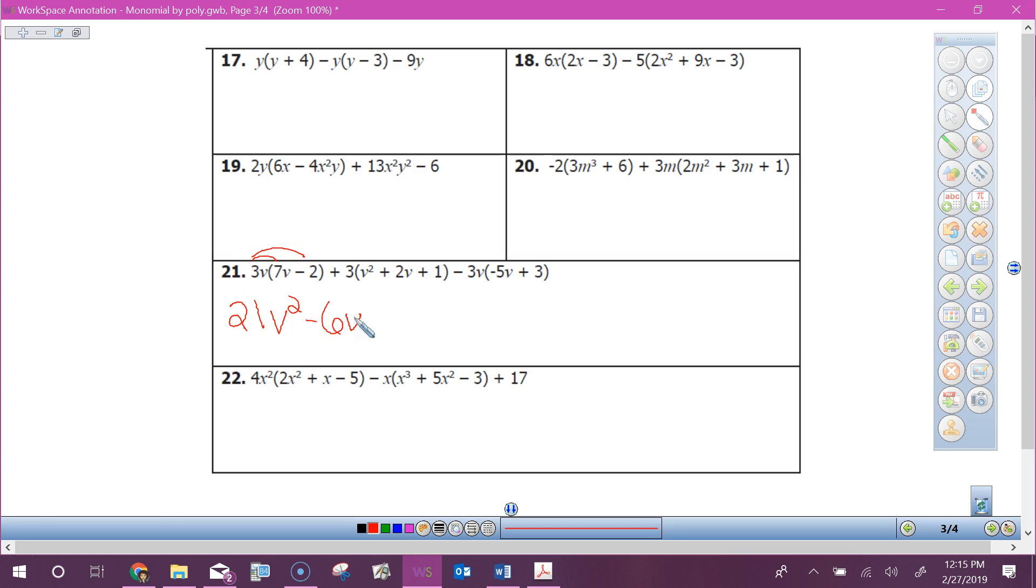And then I'm going to do my second part, so I have plus 3v squared plus 6v plus 3. I know that I've got my last part, plus 15v squared minus 9v.